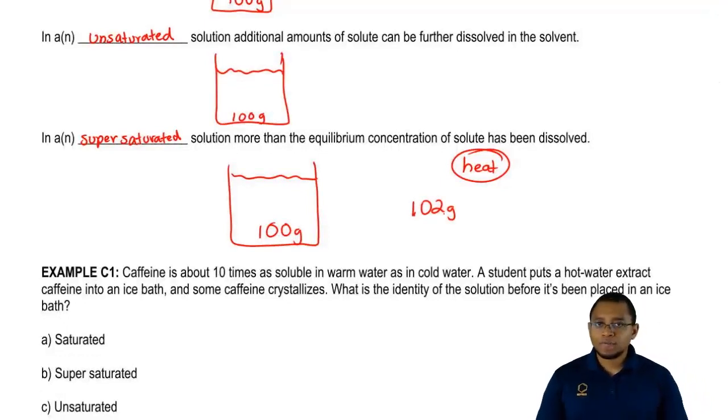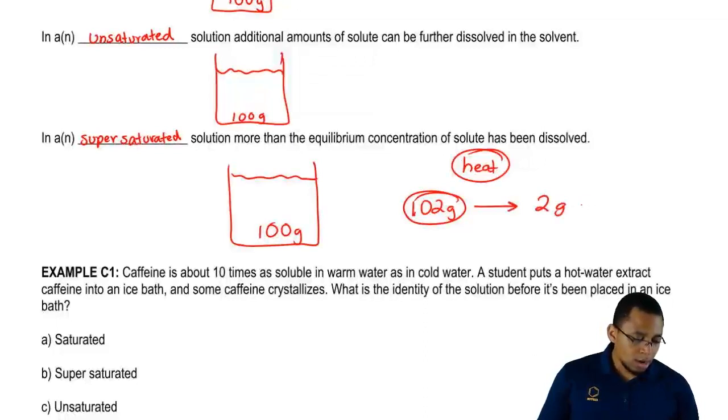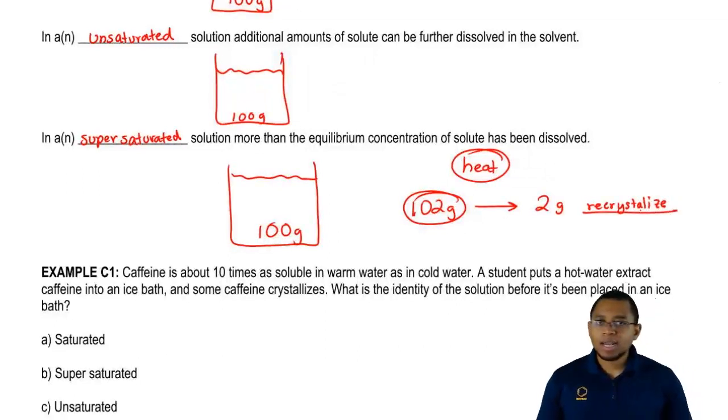Once I take away my heat, the extra 2 grams are going to form a precipitate. They're going to re-crystallize at the bottom of my bucket of water.